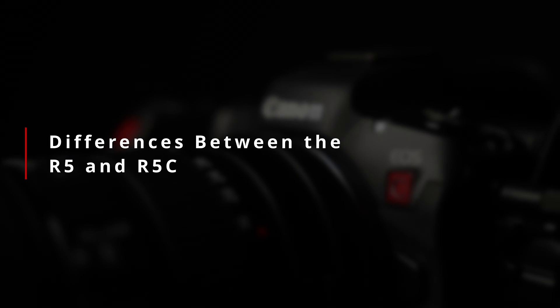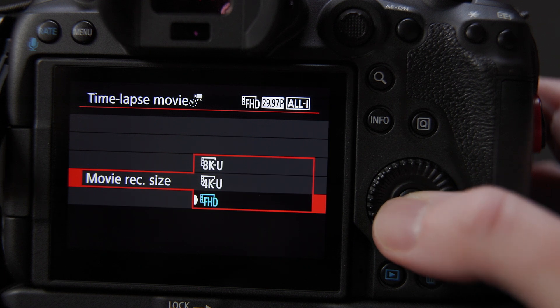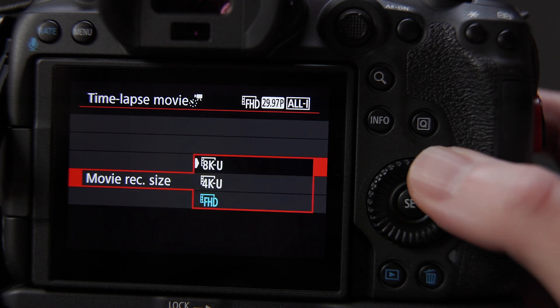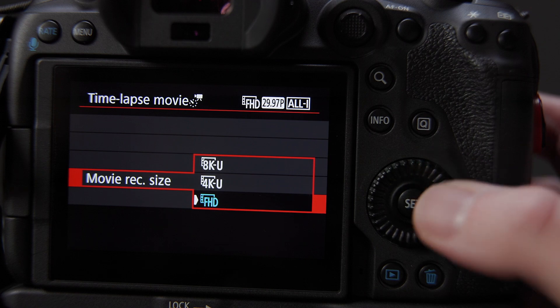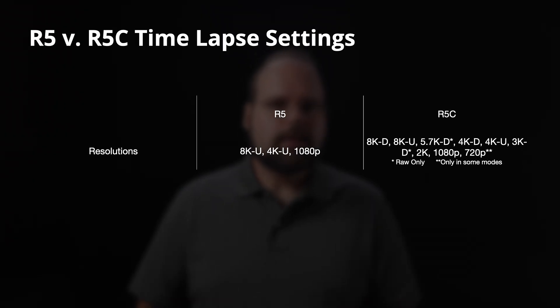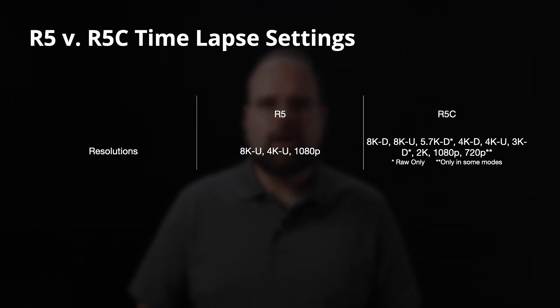Before getting to the mechanics of setting things up, let's quickly look at the major differences between the R5 and the R5C when it comes to shooting timelapse videos. On the R5, you're limited to either 8K, 4K, or 1080p using a 16 by 9 aspect ratio. You can't shoot in any of the wider 17 by 9 aspect ratio DCI formats, even though you can with the normal video options.